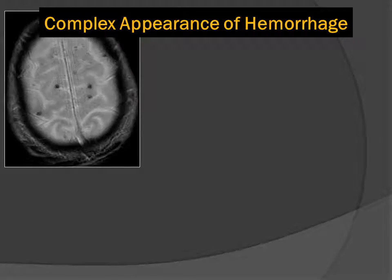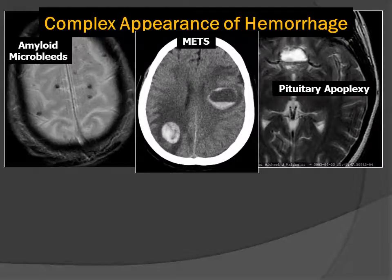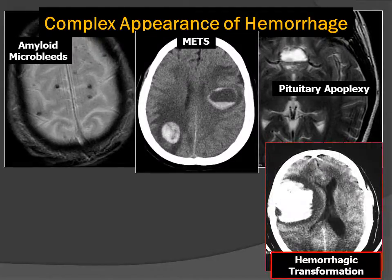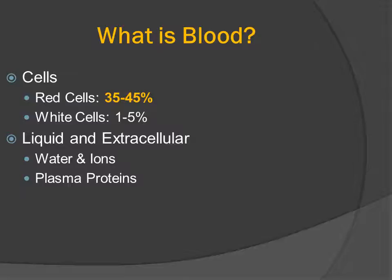Hemorrhage can have a very complex appearance on MR and CT. The appearance on MR is especially going to change based on the pulse sequence and the time after the hemorrhage has occurred. We have an MR scan here showing microhemorrhages from amyloid angiopathy, a blood-fluid level from pituitary apoplexy, multiple hemorrhagic mets on a CT scan, hemorrhagic transformation of a brain infarction, and extra-axial blood collections — an epidural hematoma and a subdural hematoma. Let's think more closely about how blood should appear on imaging.